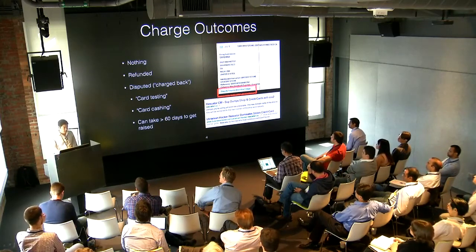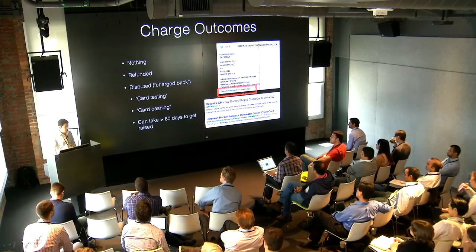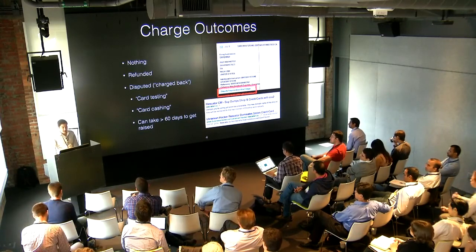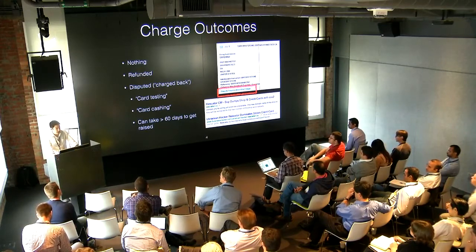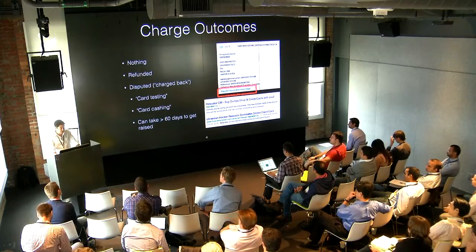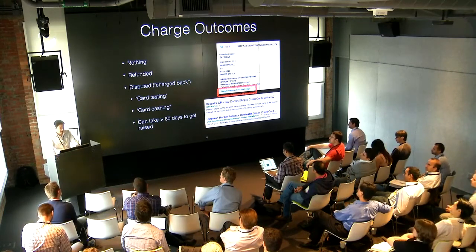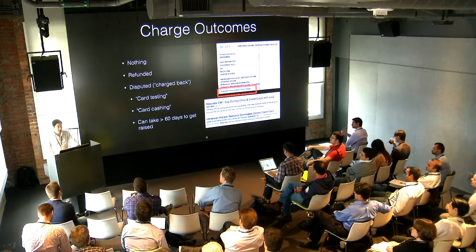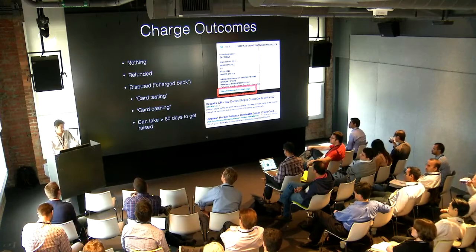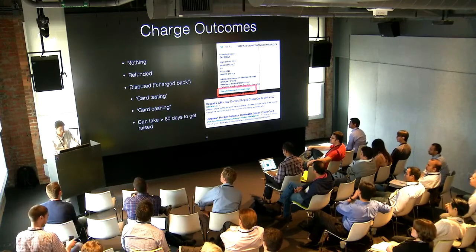A lot of fraud detection models revolve around manual review — you do some ML, flag a charge, and a human looks at it. What we try to do at Stripe is detect fraud synchronously and decline charges in real-time. That means at the time a charge is made, in that one-and-a-half seconds while the spinner is going, Stripe will score the charge and decline it.